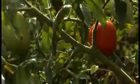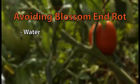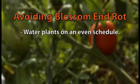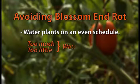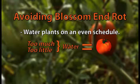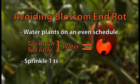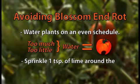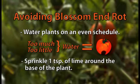Luckily, the solutions are really simple. Start by adhering to a more even watering schedule, as plants that get too much or too little water are more susceptible to blossom end rot. Another simple remedy is to sprinkle a teaspoon of lime along the base of the plant, which you can find at home garden centers and pool supply stores.